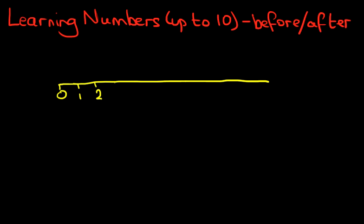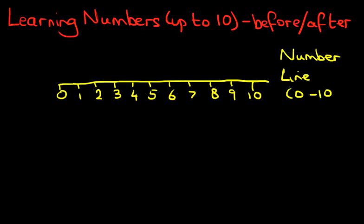Our number line begins at 0. We're going to carry on here: 6, 7, 8, 9 and 10. So this is our number line, and it begins at 0 and ends at 10.